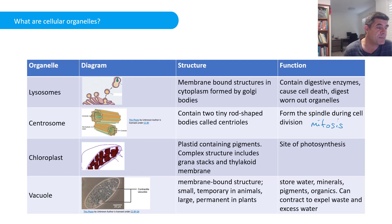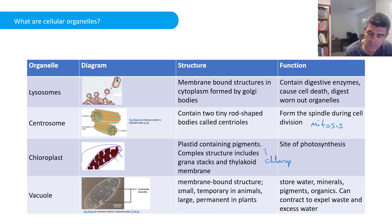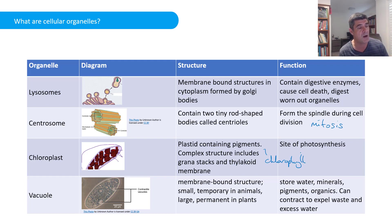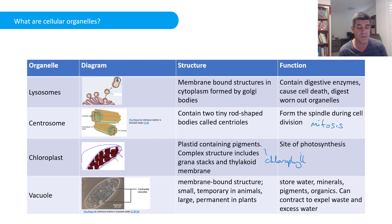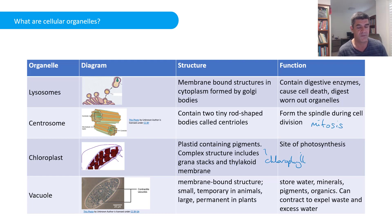Chloroplasts are a particular type of plastid — structures within cells that often contain pigments. Chloroplasts contain the pigment chlorophyll and are quite complex structures, containing little stacks called grana and a thylakoid membrane. They are the site of photosynthesis, and different parts of the photosynthesis process take place in different parts of the chloroplast, with ingenious chemical mechanisms allowing passage of materials between them.